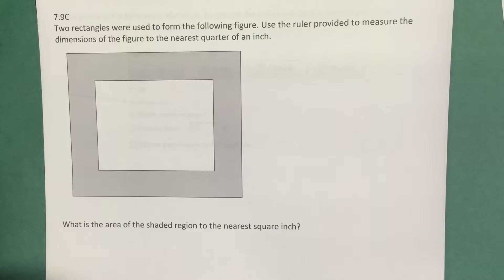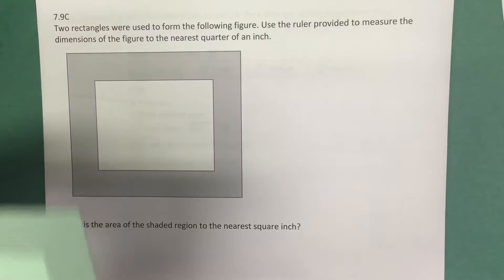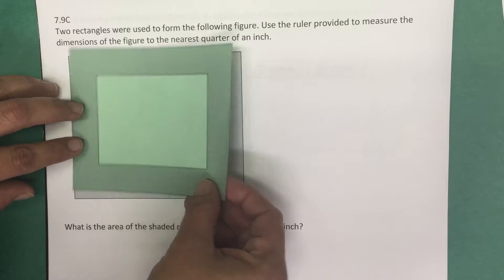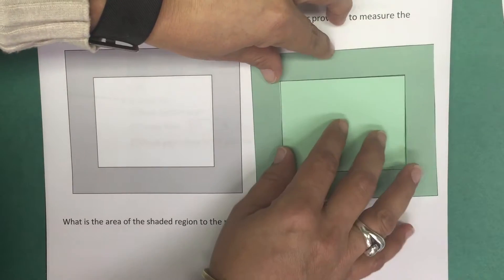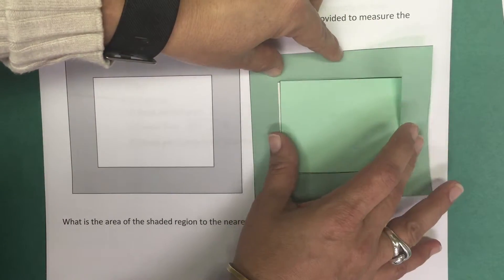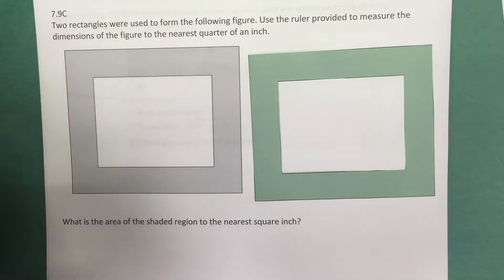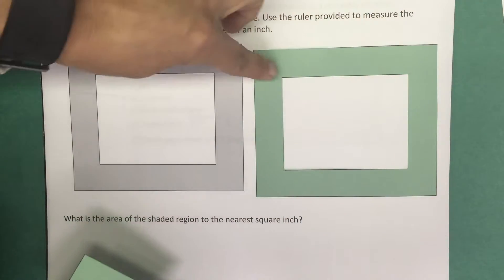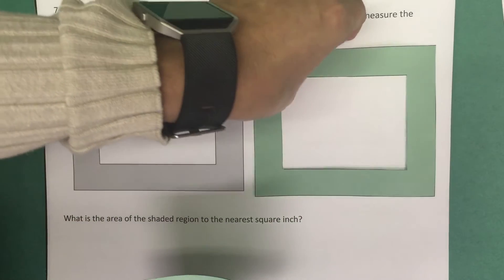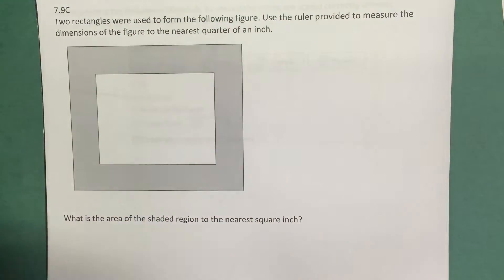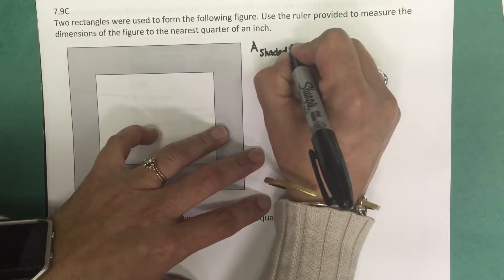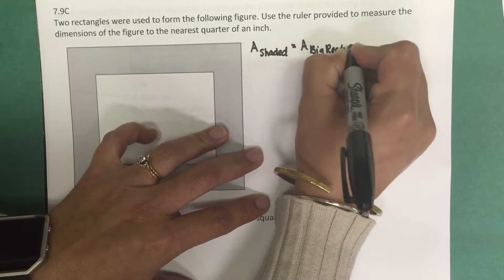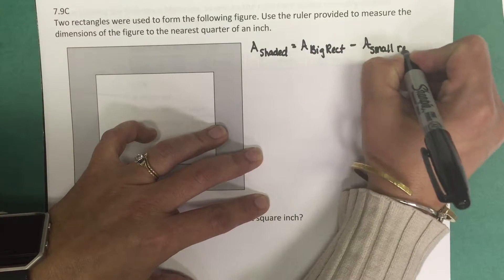How are we going to find the area of the shaded region? If we take the smaller rectangle on the inside and remove it — subtract it from the bigger rectangle — that will leave us with the area of the shaded region. So the area of the shaded part is equal to the area of the big rectangle minus the area of the smaller rectangle.